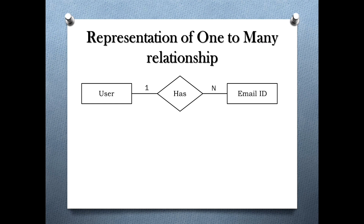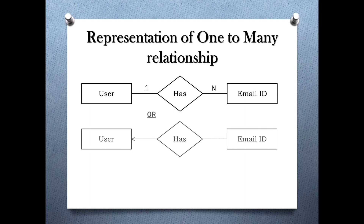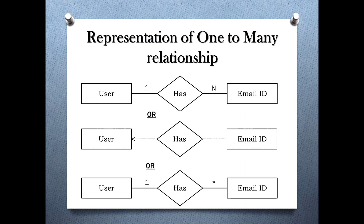Representation of one to many relationship: In an ER diagram, a one to many relationship can be represented either by writing '1' and 'n' on the respective sides of the relationship set, or by using an arrow on the side representing 1. Sometimes, an asterisk is used in place of n.